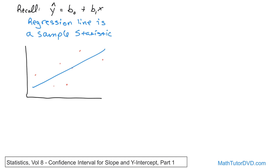But let me ask you a question. This line basically comes from just a handful of data points. What do you think would happen if we asked 10 totally different people and got 10 totally different data points? We would calculate a different regression line. If we did that again and again — another set of 10 people, another set — each time we'd get slightly different data points and slightly different regression lines. So which one of these is the best?